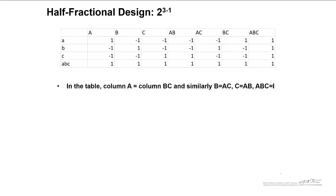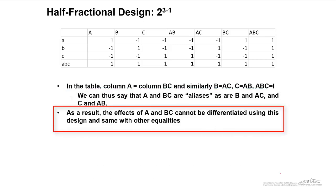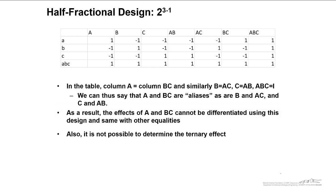So let's just summarize what we concluded with the half fractional design, 2 to the 3 minus 1. In the table, column A equals column BC and similarly B equals AC and C equals AB and ABC equals I. We can thus say that A and BC are aliases as are B and AC and C and AB. As a result, the effects of A and BC cannot be differentiated using this design and same with the other equalities. Again, typically binary interactions like BC are significantly less than main effects. And so if we are getting a significant effect due to the combination of A and BC, it's likely that most of that is caused by the main effect of A. Also, whenever we have a column equal to I, like ABC equals I, we cannot determine the effect for that column.